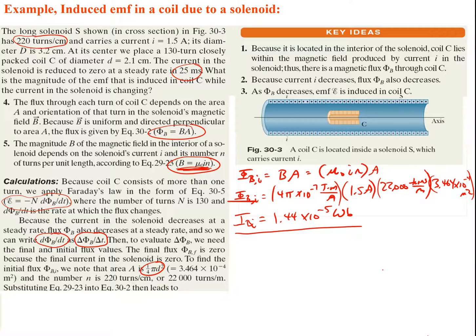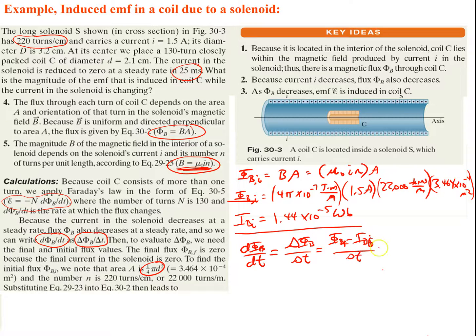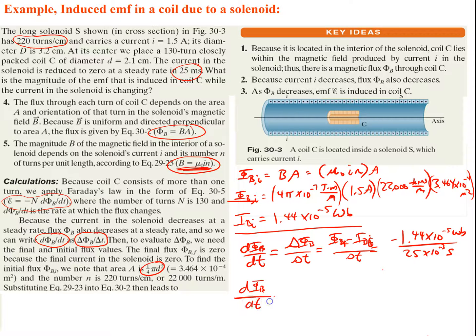Now we find the rate of change of flux: ΔΦ/Δt = (Φ_final − Φ_initial)/Δt = (0 − 1.44 × 10⁻⁵ Wb) / (25 × 10⁻³ s) = −5.76 × 10⁻⁴ Wb/s. Since Webers per second equals volts, this is −5.76 × 10⁻⁴ volts.